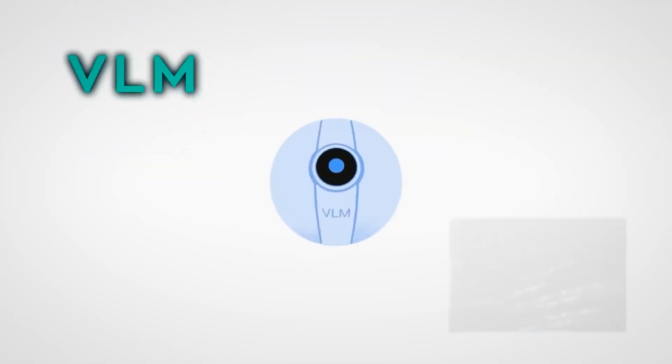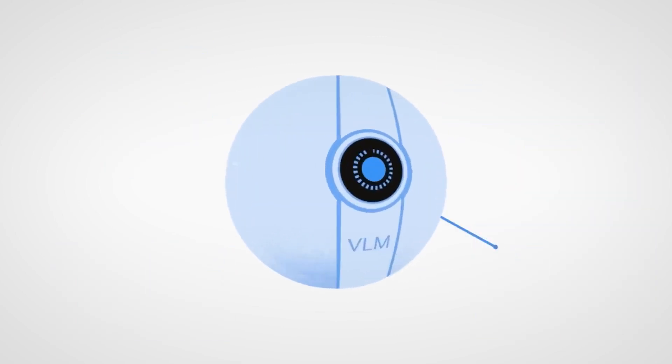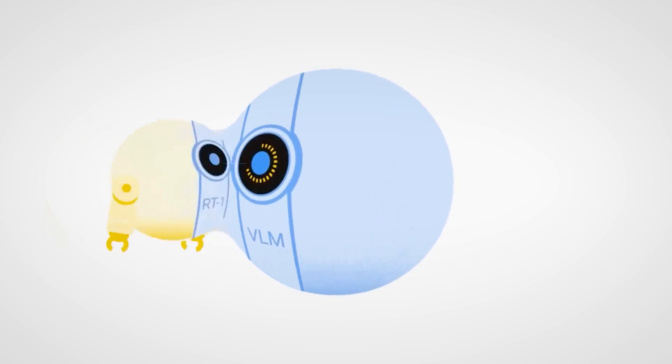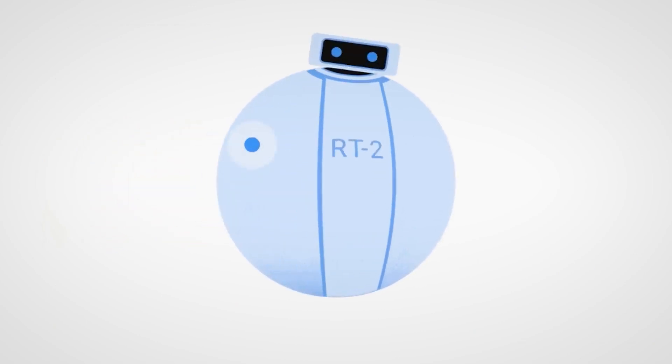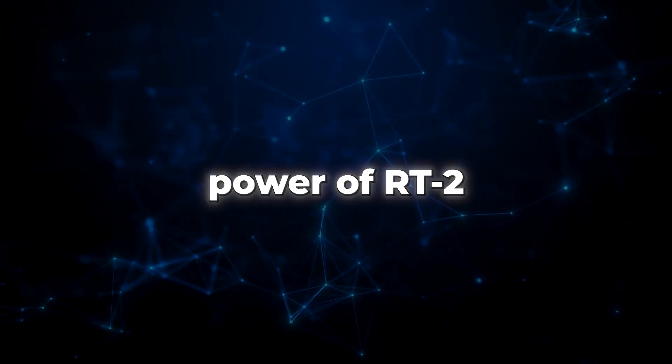With RT2 leading the way, the future of robotics has never been more exciting. It takes images and turns them into magical language that robots can understand. This robot can also answer your questions about what it sees, tell you what's in the pictures, and even recognize objects. That's the power of RT2.